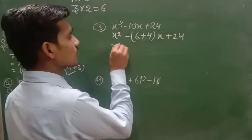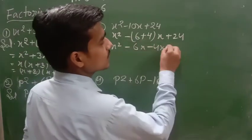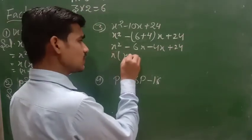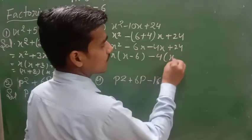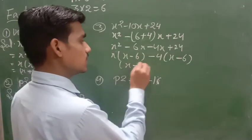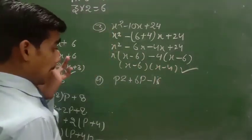x² - 6x - 4x + 24. Plus minus is minus. And you will write here common: x(x - 6) - 4(x - 6). Again x - 6, you will write here common: (x - 4)(x - 6). This is your answer.